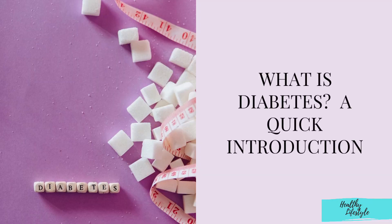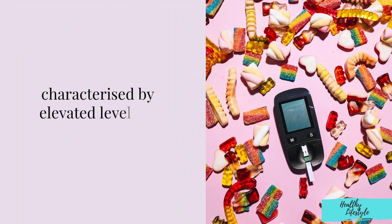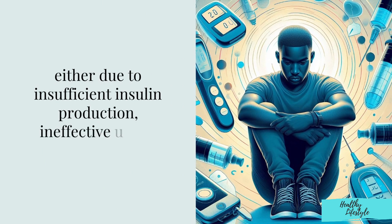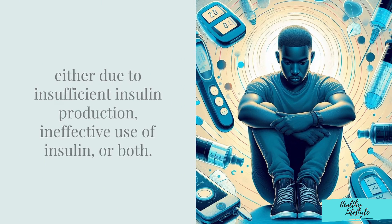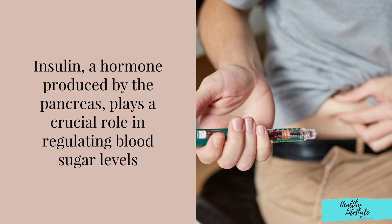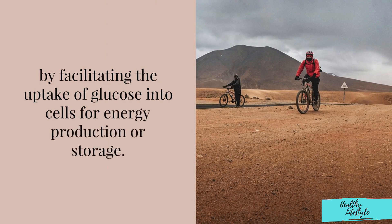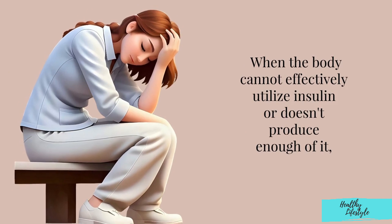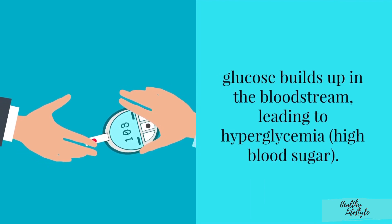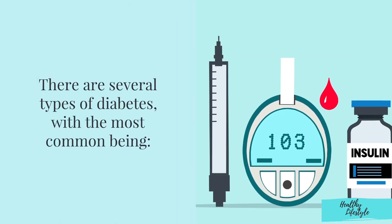Diabetes is a chronic metabolic disorder characterized by elevated levels of glucose (sugar) in the blood, either due to insufficient insulin production, ineffective use of insulin, or both. Insulin, a hormone produced by the pancreas, plays a crucial role in regulating blood sugar levels by facilitating the uptake of glucose into cells for energy production or storage. When the body cannot effectively utilize insulin or doesn't produce enough of it, glucose builds up in the bloodstream, leading to hyperglycemia (high blood sugar).